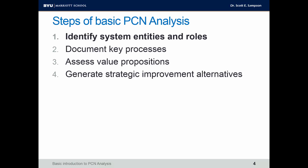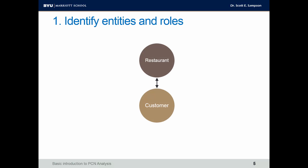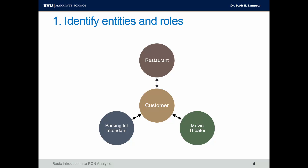First, let's look at identifying system entities and roles. The example in the book talks about a customer that goes to a restaurant — those are two different entities, one being the customer, the other the restaurant, which could include restaurant employees, cooks, and so forth. The customer might also interact with a movie theater, since after dinner they may be going to a movie, requiring coordination between eating timing and movie theater timing. They may also interact with a parking lot attendant if they're using paid parking as part of this evening experience. It's pretty basic to identify entities and roles by thinking of the various participants in a particular service experience.